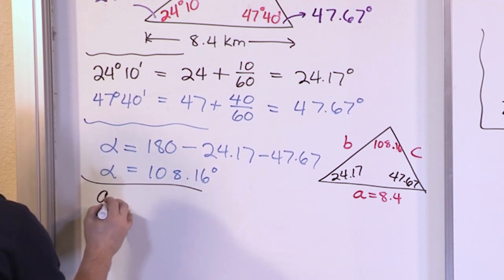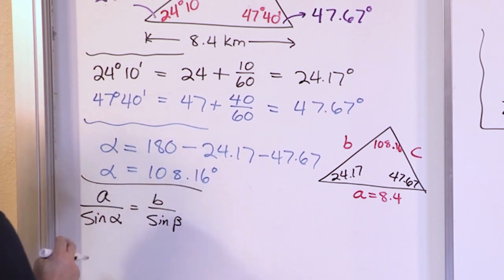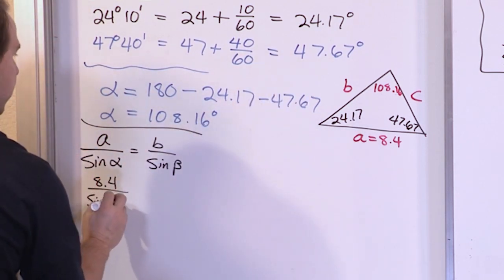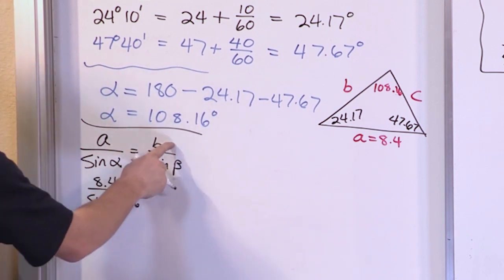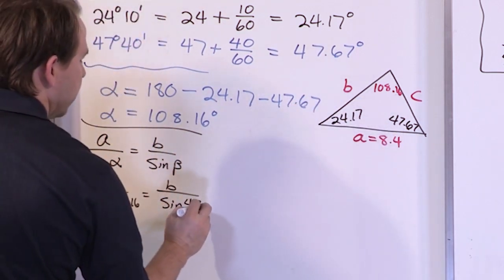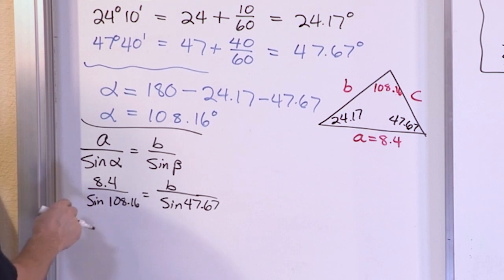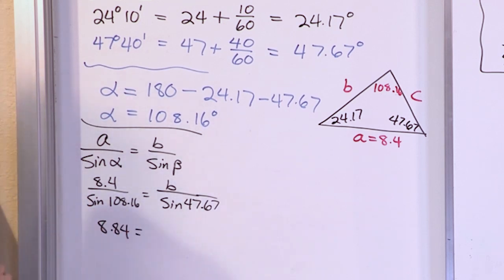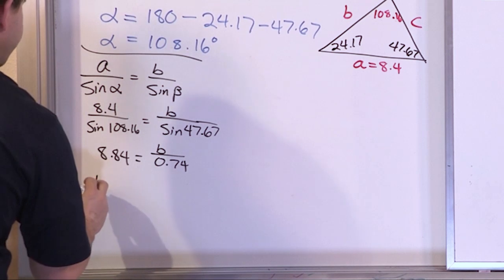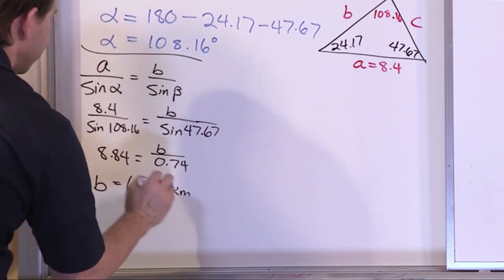Using the law of sines: a over sine of alpha equals b over sine of beta. That's 8.4 over sine of 108.16 equals b over sine of 47.67. The left side simplifies to 8.84. Sine of 47.67 is 0.74, so b equals 8.84 times 0.74, which is 6.54 kilometers.